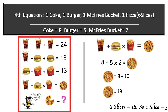In the fourth equation we have one coke plus one burger multiplied by one mac fry, which equals one pizza that has six slices. Substituting the known values: one coke = 8, so I've written 8 here, plus burger = 5, multiplied by mac fry bucket = 2.